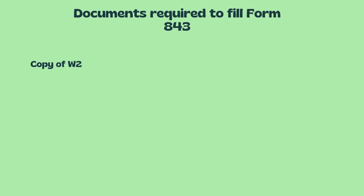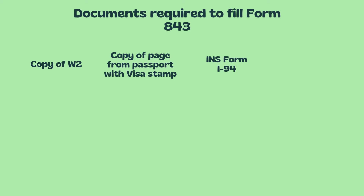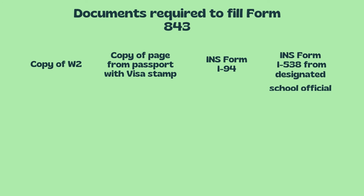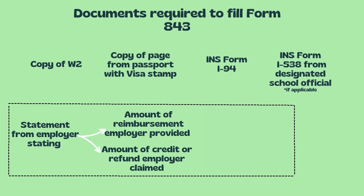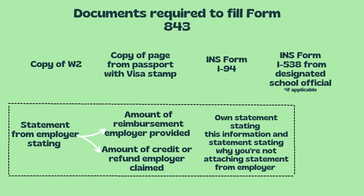Here are the documents you will need to file Form 843: a copy of your Form W-2 to prove the amount of Social Security and Medicare taxes withheld; a copy of the page from your passport with the visa stamp; INS Form I-94; if applicable, INS Form I-538 certification by designated school official; a statement from your employer indicating the amount of reimbursement provided and the amount of credit or refund claimed — if you cannot obtain this statement, provide your own and explain why; and if applicable, Form 8316, information regarding request for refund of Social Security tax withheld on wages received by a non-resident alien on F, J, and M-type visas.